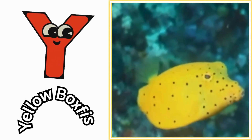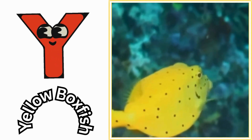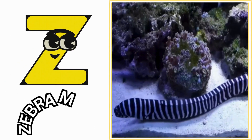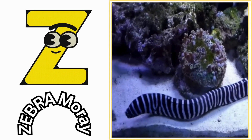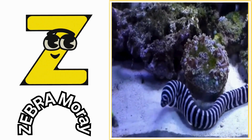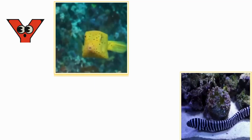Y is for yellow boxfish. Yellow boxfish. Z is for zebra moray. Zebra moray.